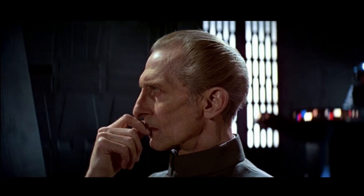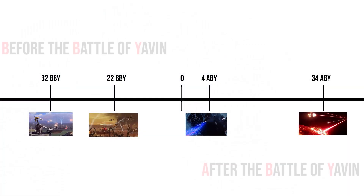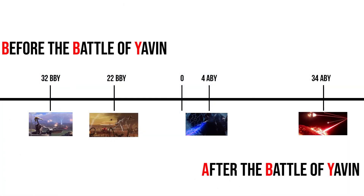Let's start with the galactic calendar system that has Year Zero at the Battle of Yavin. Before the Battle of Yavin is BBY, and after the Battle of Yavin is ABY. The Battle of Naboo is 32 years before the Battle of Yavin, so 32 BBY. Starkiller Base was destroyed 34 years after Yavin, so 34 ABY.